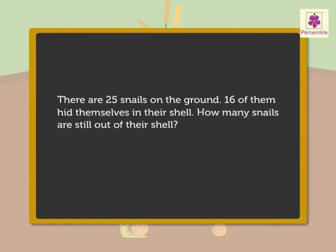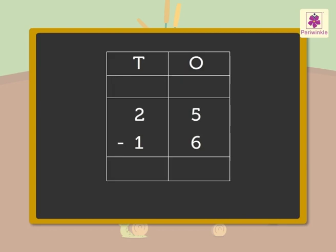Now, let us see what information we have and what we have to find out. Information: 25 snails on the ground and 16 of them hid themselves. We have to find out how many snails are still out of their shell. To find the answer, we have to subtract 16 from 25.